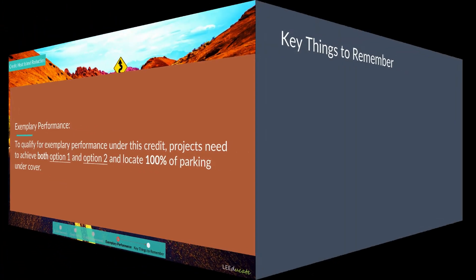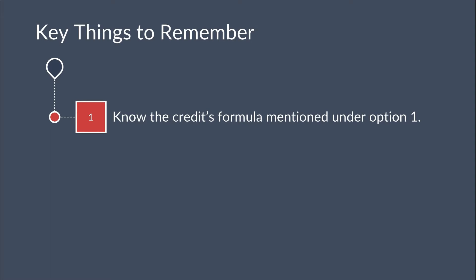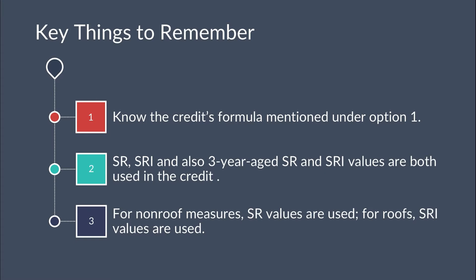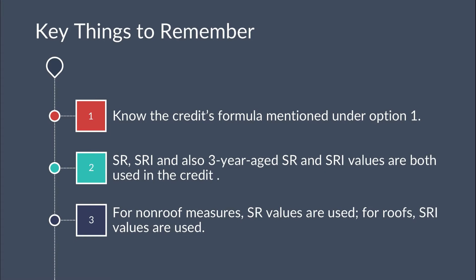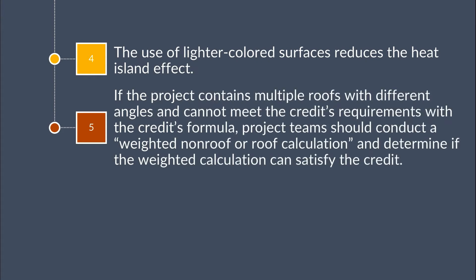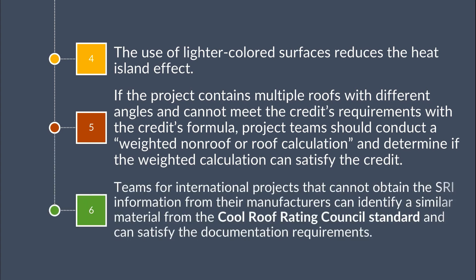Key things to remember for this credit: 1) Know the credit formula under Option 1. 2) SR, SRI, and three-year aged SR and SRI values are both used. 3) For non-roof measures, SR values are used; for roofs, SRI values are used. 4) Lighter-colored surfaces reduce the heat island effect. 5) For projects with multiple roofs at different angles that cannot meet requirements with the standard formula, project teams should conduct a weighted non-roof or roof calculation. 6) International project teams that cannot obtain SRI information from manufacturers can use the Cool Roof Rating Council standard.